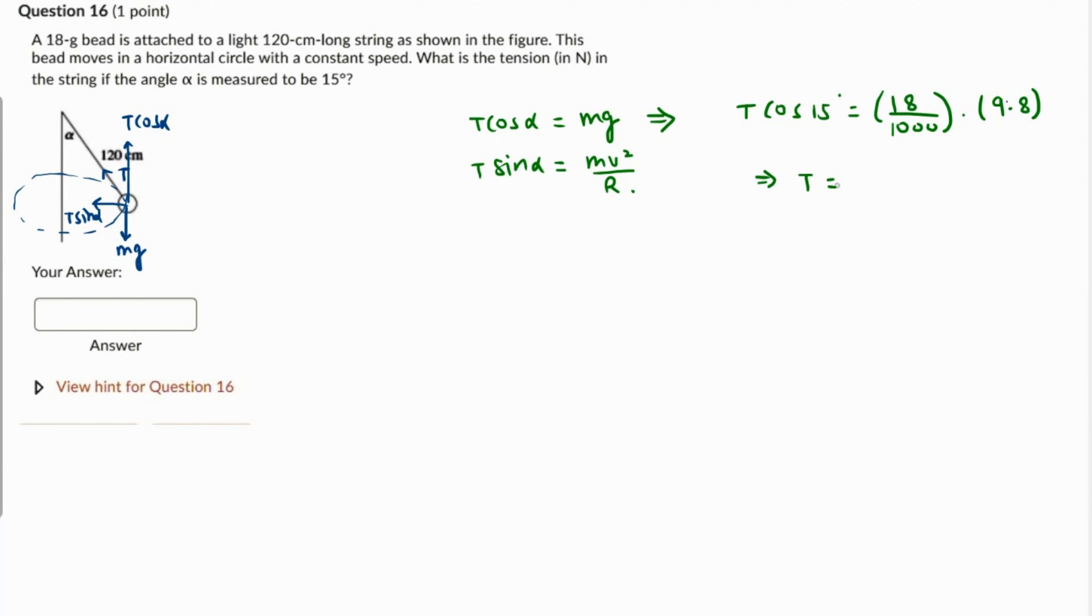Comes out as 18 times 9.8 over 1000 over cosine of 15 degrees. So the value of tension comes out as 0.18 newton, up to two decimal places. So this is the required answer for the tension.